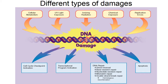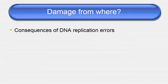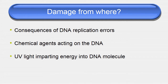Damages are caused through cellular metabolism, UV light exposure, ionizing radiation, chemical exposure, and replication errors. That damage is checked by cell cycle checkpoint activation, transcriptional program activation, repair mechanisms, and apoptosis. In repair mechanisms, the types are: direct reversal, base excision repair, nucleotide excision repair, mismatch repair, and double strand break repair including homologous recombination.